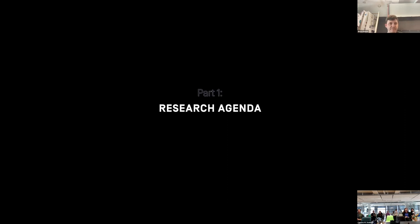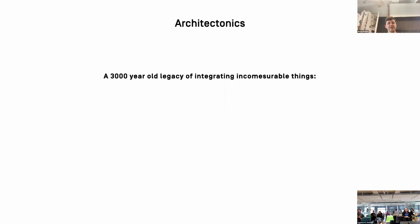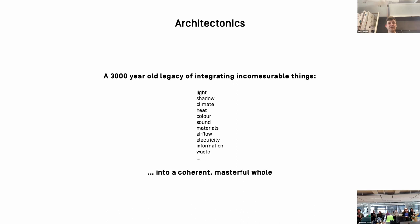Initially I got interested in architecture through the lens of design, but my interest evolved as I started doing research. What I found more and more compelling is that an architect's work — whether building a theory or a building — always involves integration of a wide variety of aspects outside our area of expertise. We integrate incommensurable things such as light, shadow, climate, heat, color, sound, materials, airflow, electricity, information, and waste, among others.